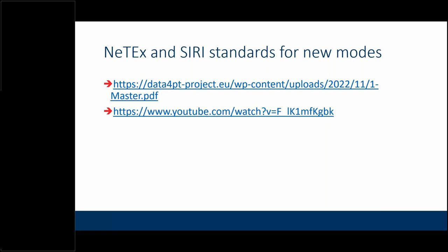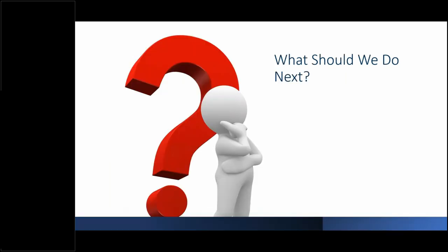So we've looked at what active travel is, the challenges, a range of examples of how other people have approached it, and the data standards. We're now opening up for questions. I'm particularly interested in knowing what you would want to see RTIG doing in this area, and whether there are any challenges we might be able to form a group around to help with.